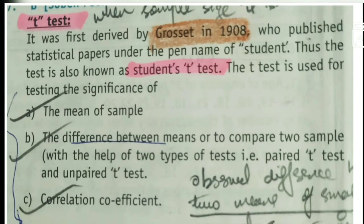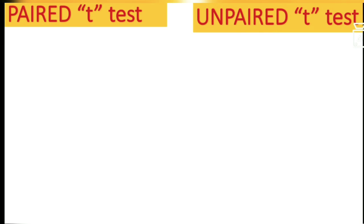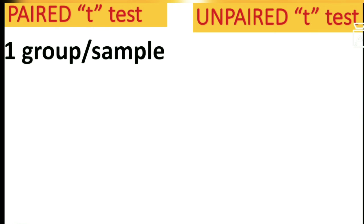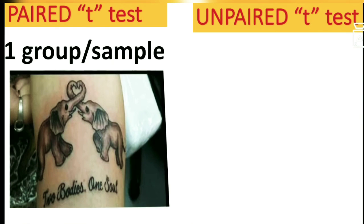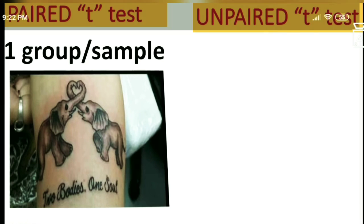In paired t-test, whenever you hear the word 'paired,' paired means two people have paired together — they have come together and become one. So you can remember this as one group or one sample. Like the example 'two bodies, one soul' — when two things pair together they become one. So remember paired t-test as one group or one sample.